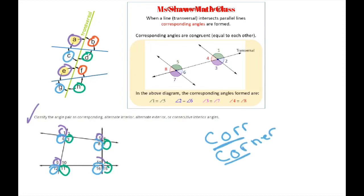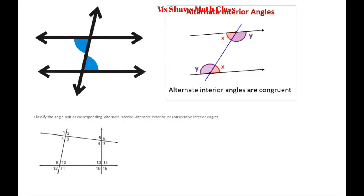Alternate interior angles are the ones you're probably most used to. They're on the interior and they alternate. Looking at our diagram, we have 4 and 10, 8 and 14, and then also 3 and 9, and 7 and 13. They're all alternate interior angles, and they are congruent — equal to each other.